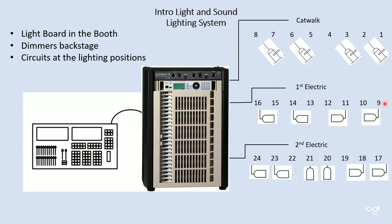Picking up with number 9, dimmer number 9, that electricity is routed out to circuits 9 through 16 on our first electric, and our lights just plug into whichever one is most convenient. Then 17 through 24 go to our second electric. So again, a signal cable goes from all the way out front into our closet or basement, and then electrical cables run up to our catwalk, our first and our second electric.